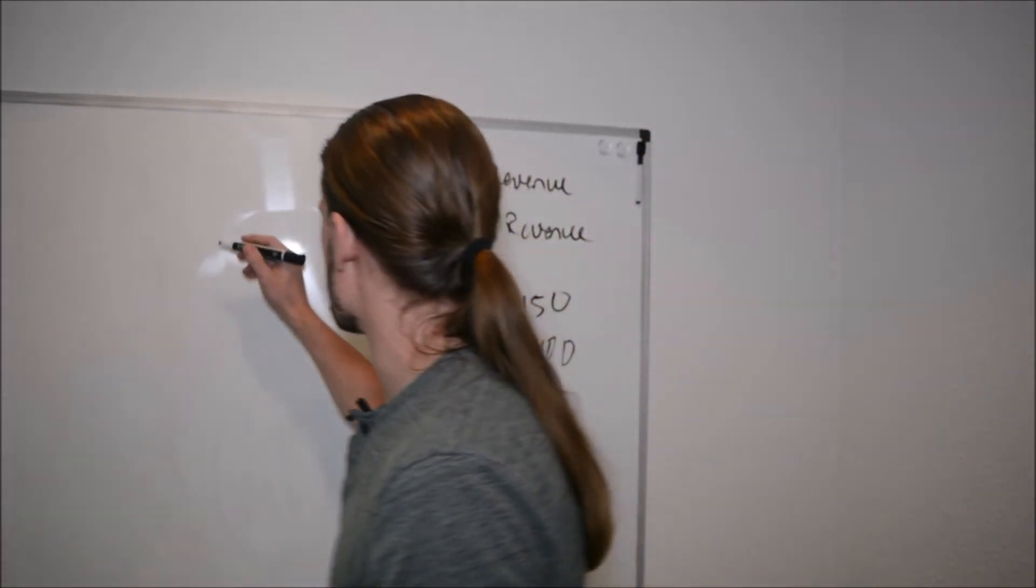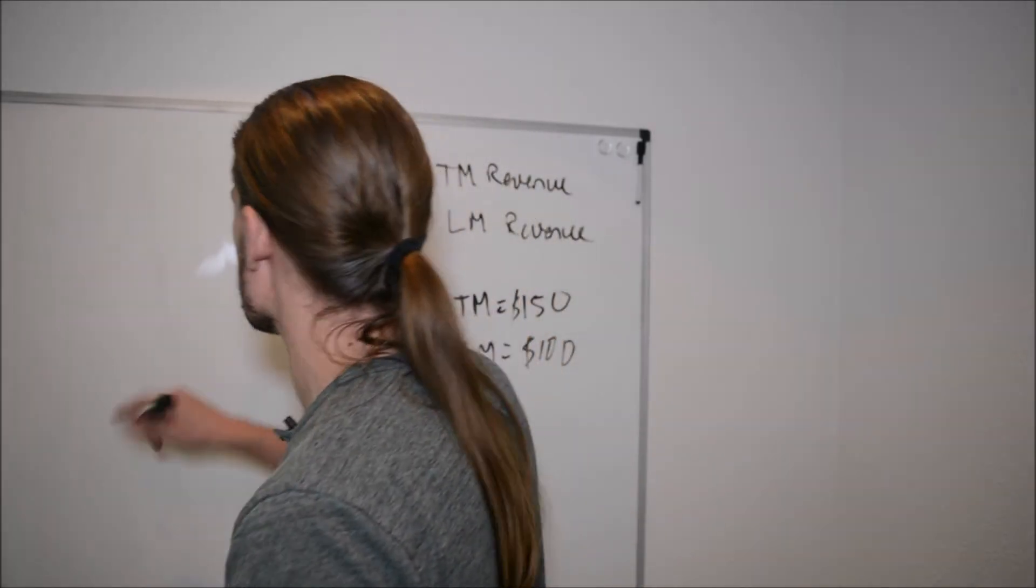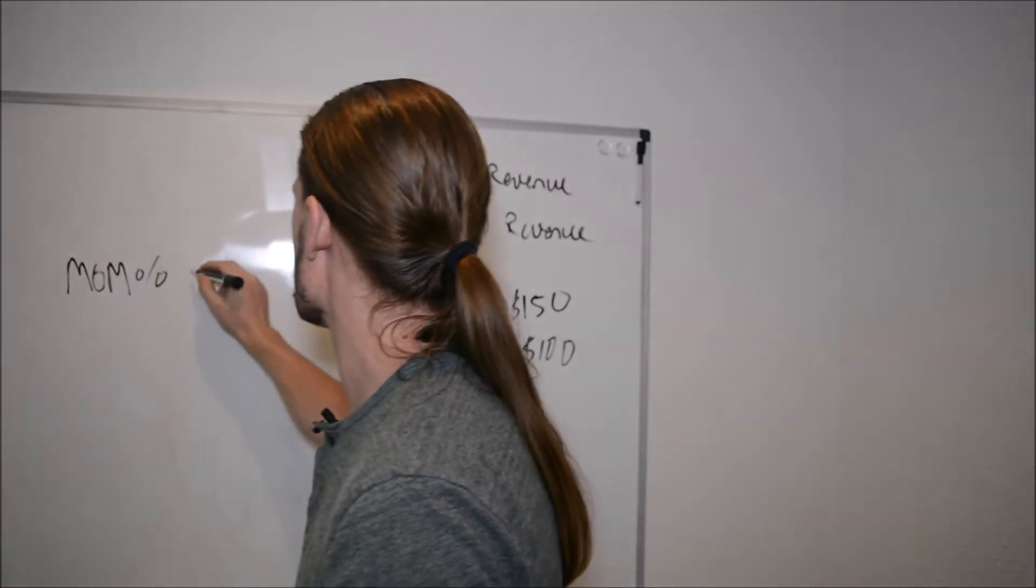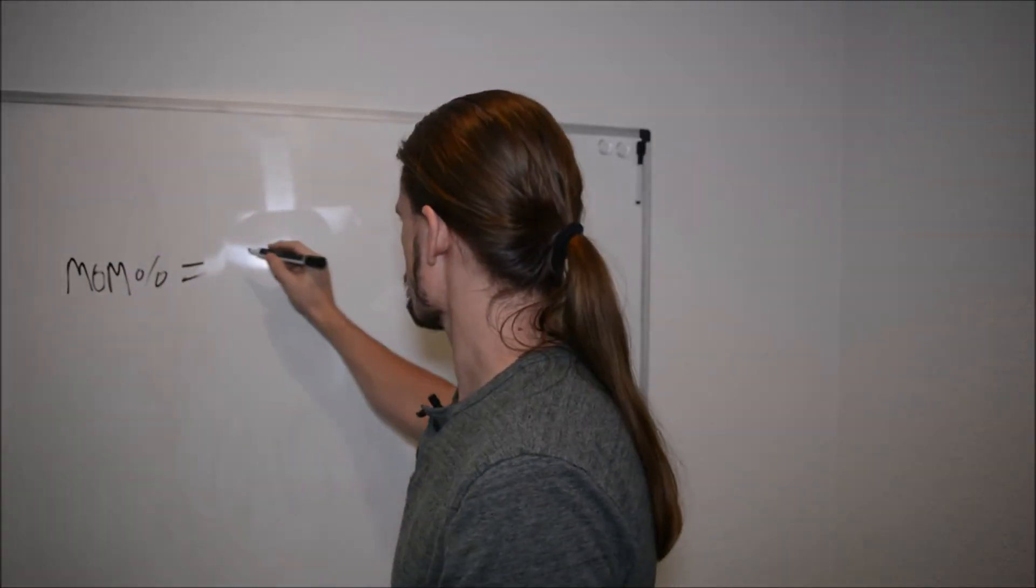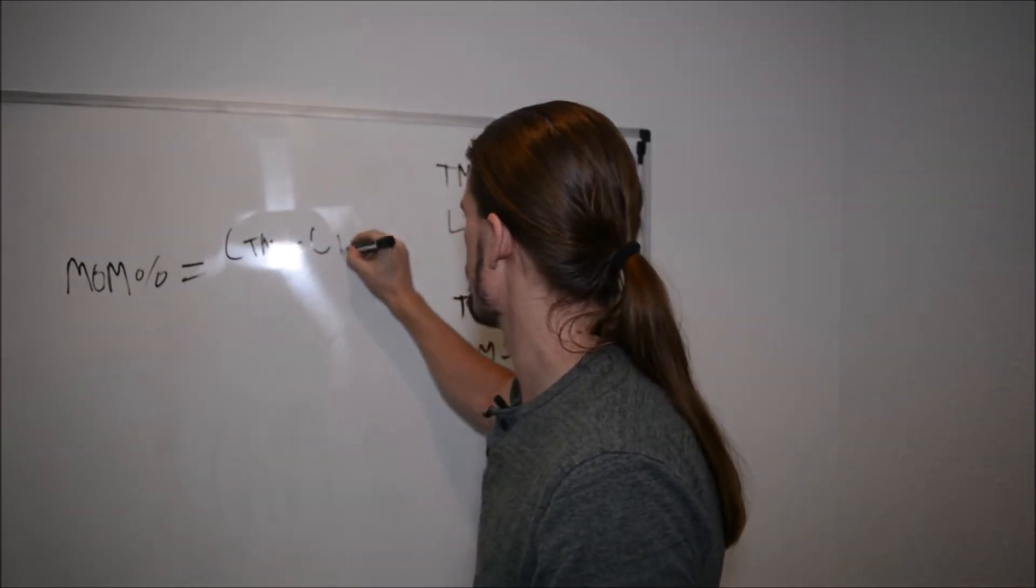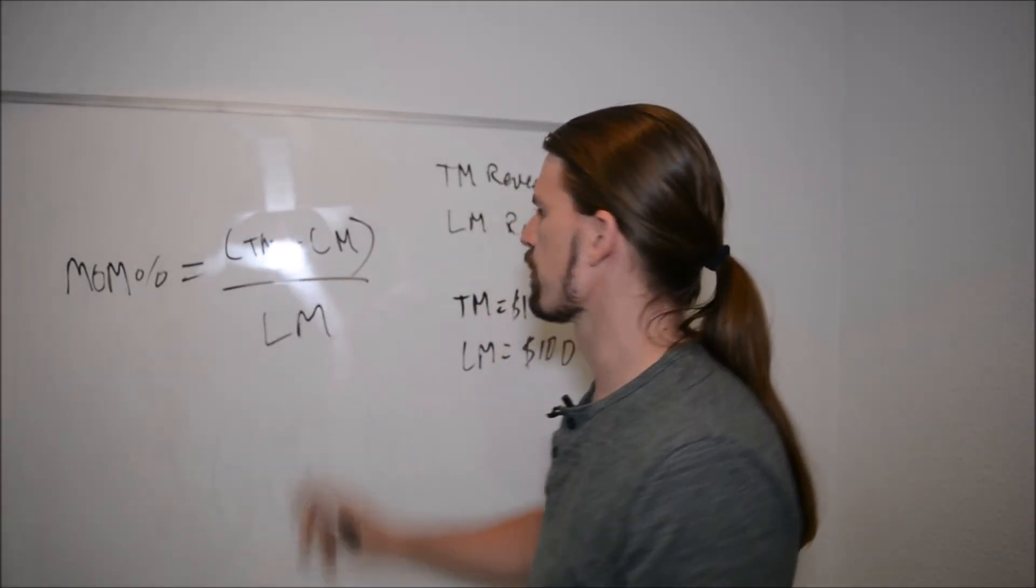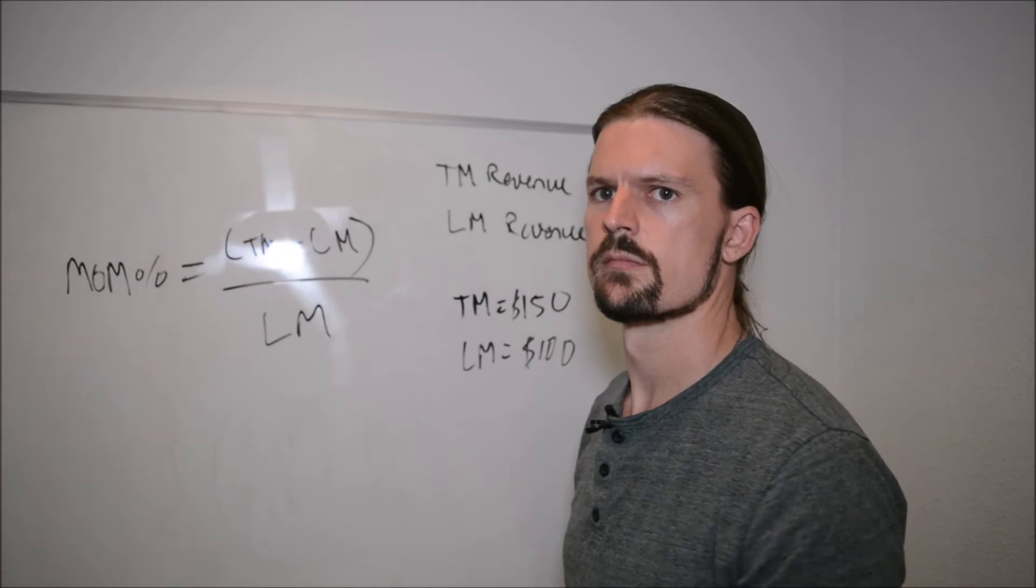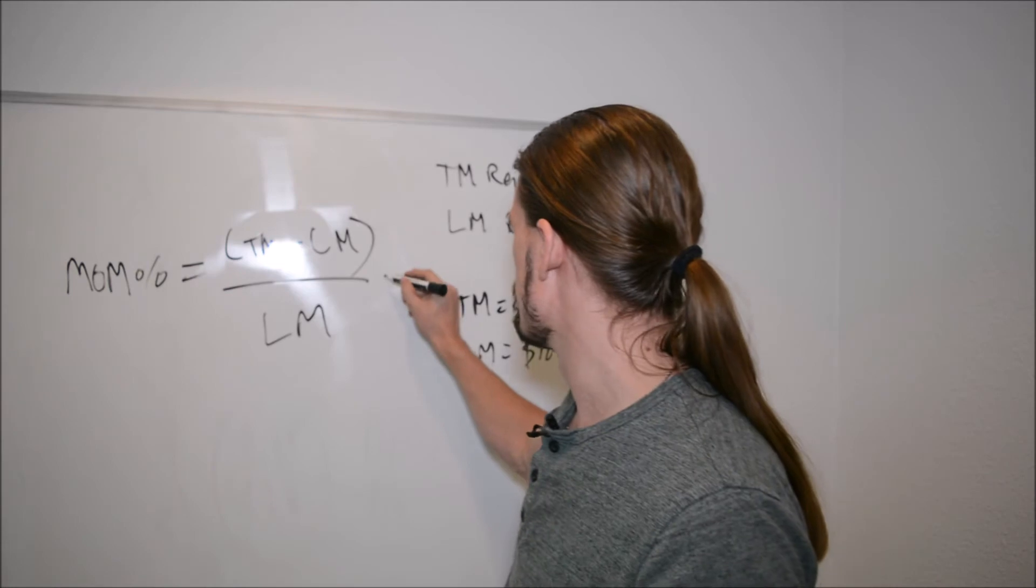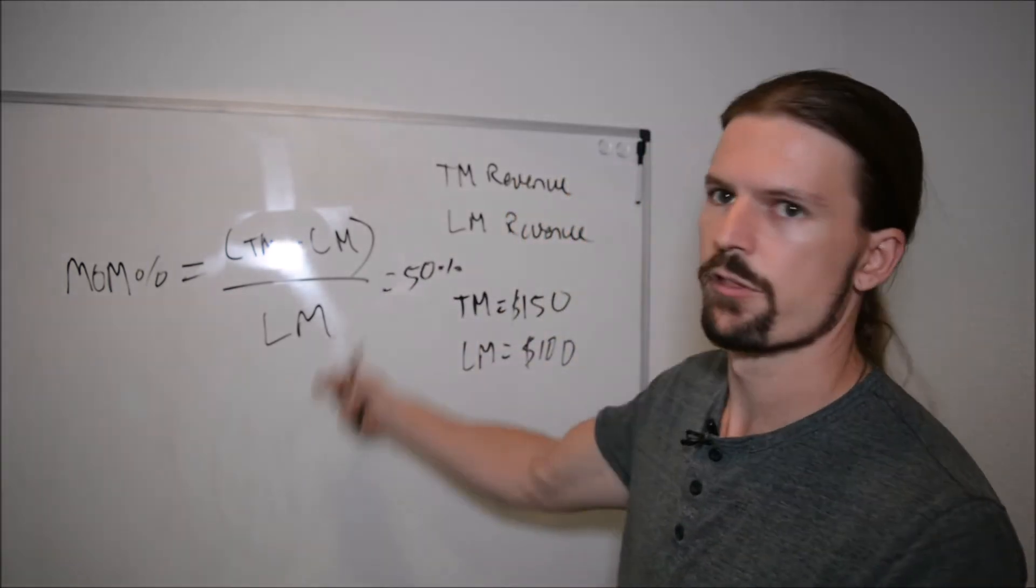So what you want to do is you want to tell the computer, again, you don't have to calculate this. You just tell the computer that month over month percent equals this month minus last month revenue divided by last month revenue. And so that's it, right? And that's going to equal, I mean, in our example, it's going to be what? 50%. So we had a 50% increase month over month.